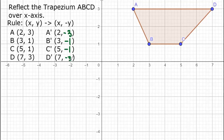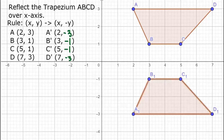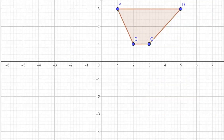Point D: (7, 3) becomes (7, negative 3). So when we do reflection over the x-axis, we change our y values into their opposites. Now we have A₁ at (2, negative 3) — plotted in quadrant 4 since positive x and negative y land in quadrant 4. B₁ is (3, negative 1), C₁ is (5, negative 1), and D₁ is (7, negative 3). Connect the dots to form your reflected figure. From quadrant 1, reflected over the x-axis, it moves into quadrant 4.